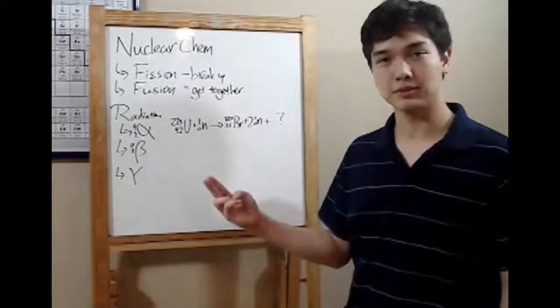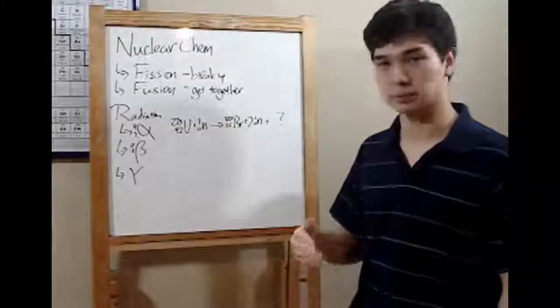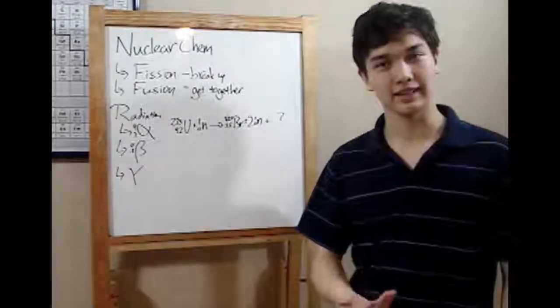And it's covered in high school chemistry, so let's go. There are two types of nuclear reactions, fissions and fusions. Fissions are when atoms break up, and fusions are when they get together.